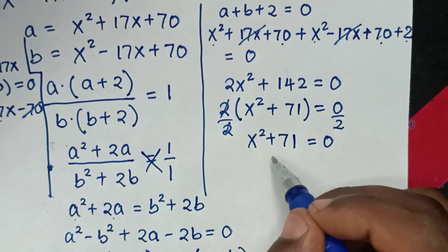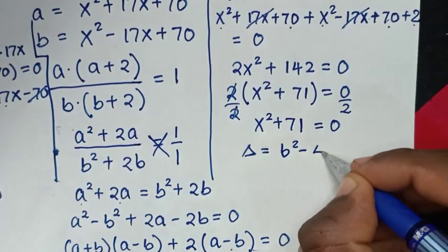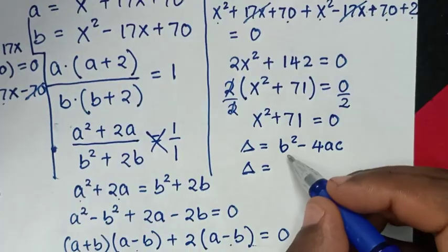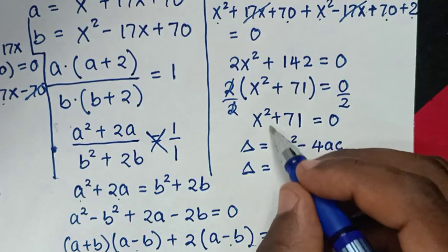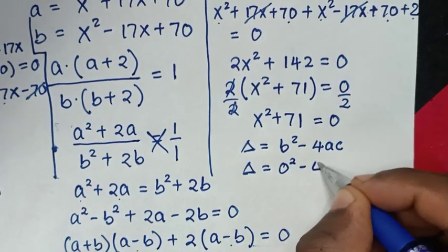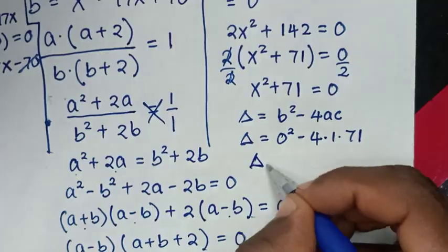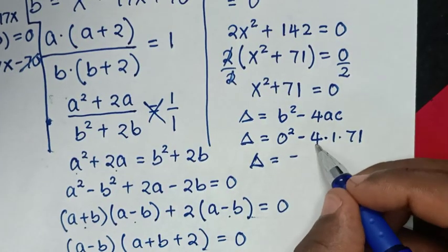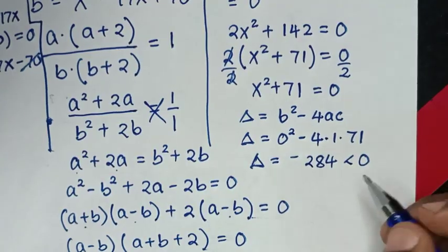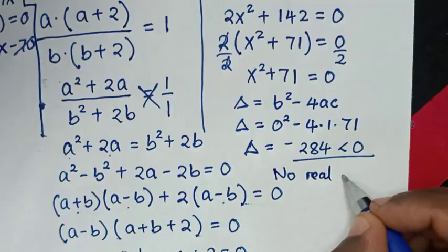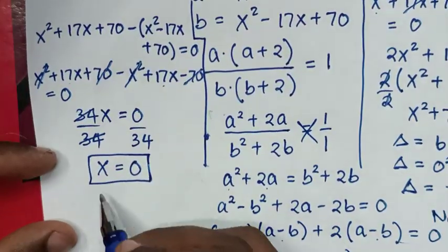We check whether this quadratic has a real solution using the discriminant formula: discriminant equals b²-4ac. Here there is no x term, so b equals 0. Thus discriminant equals 0² minus 4 times 1 times 71, which equals negative 284. Since the discriminant is less than 0, there is no real solution for the second case. So the only real solution is x equals 0.